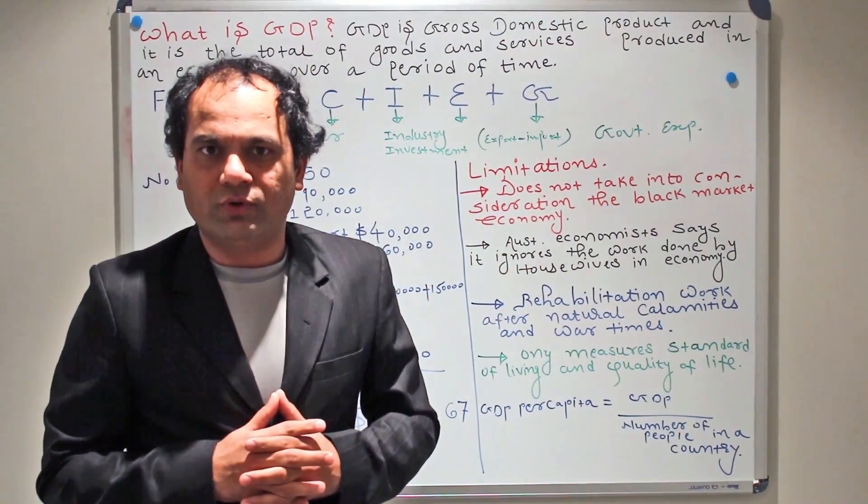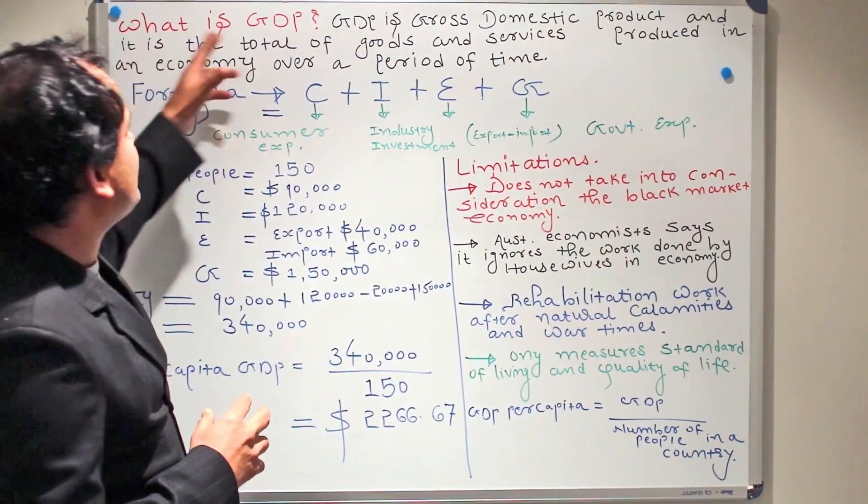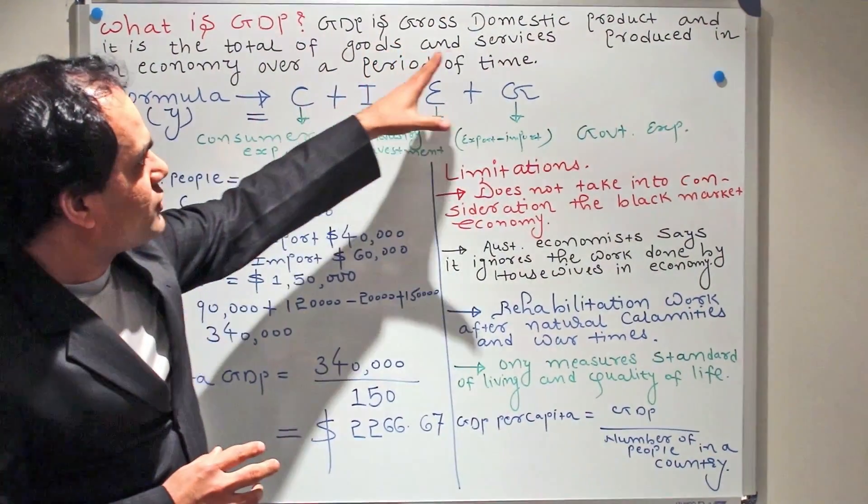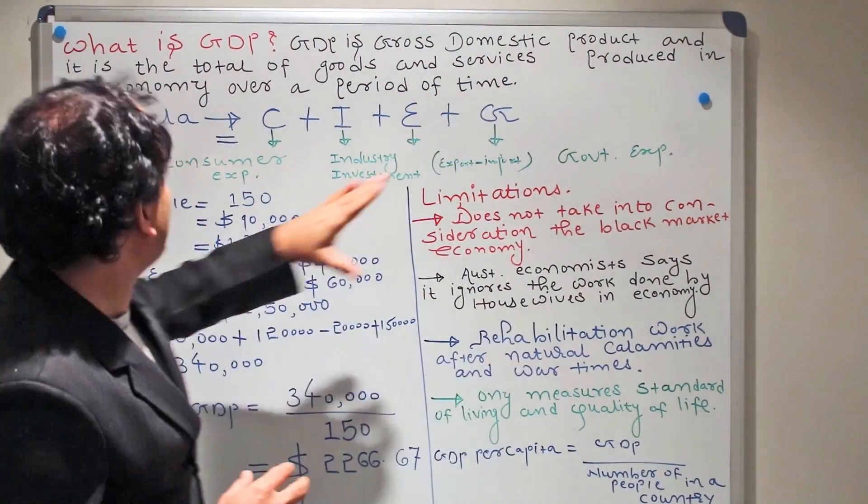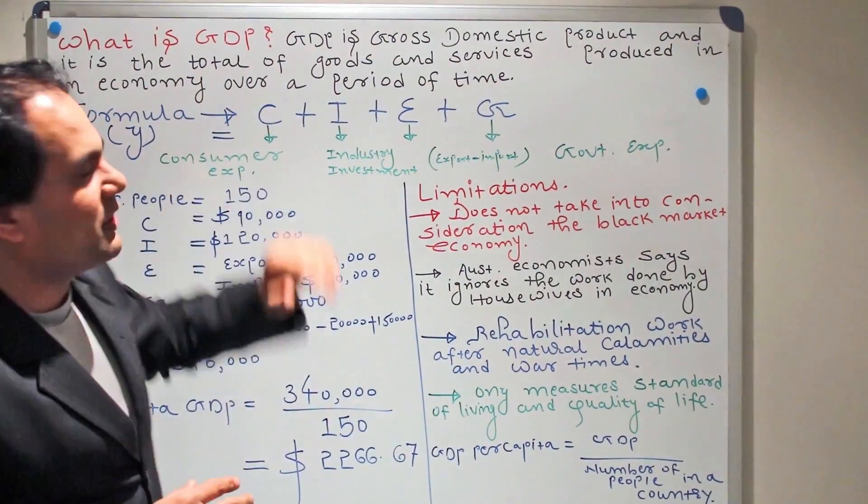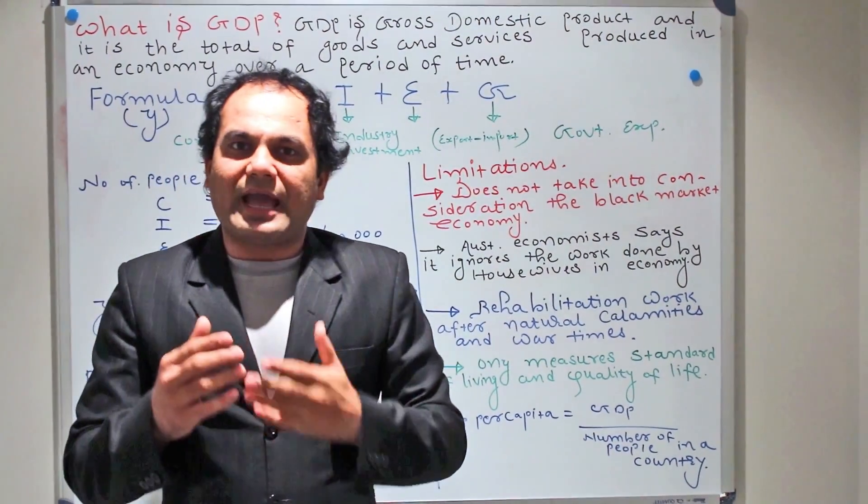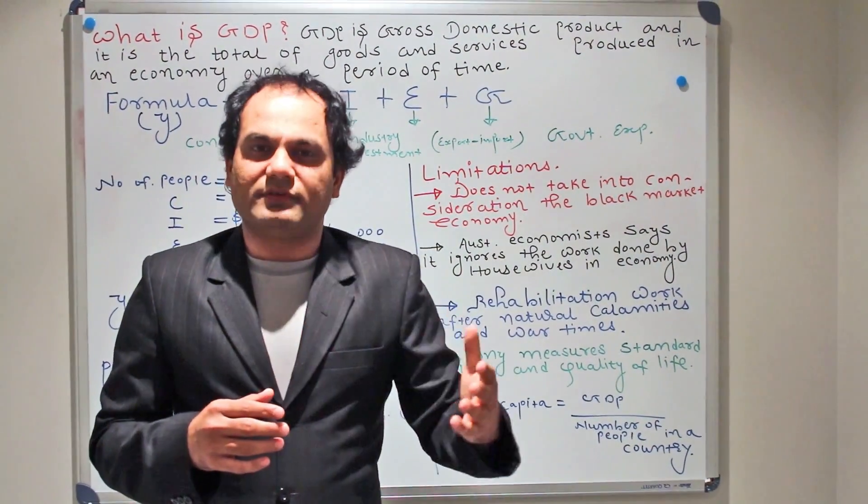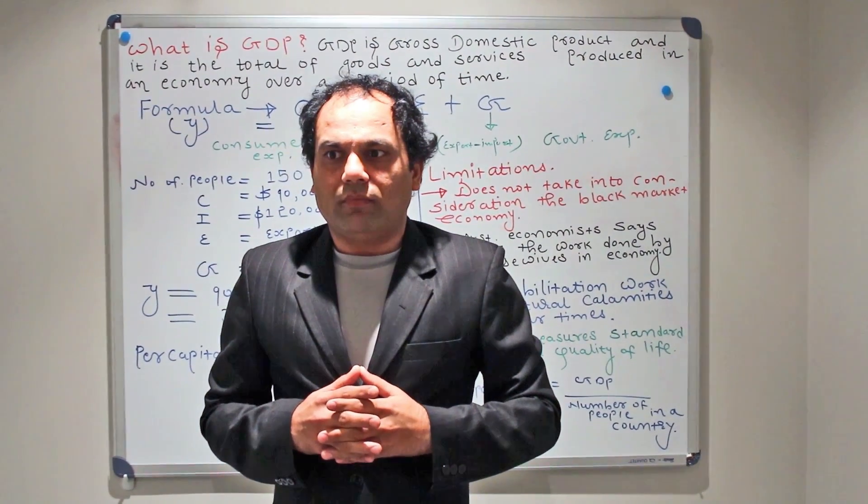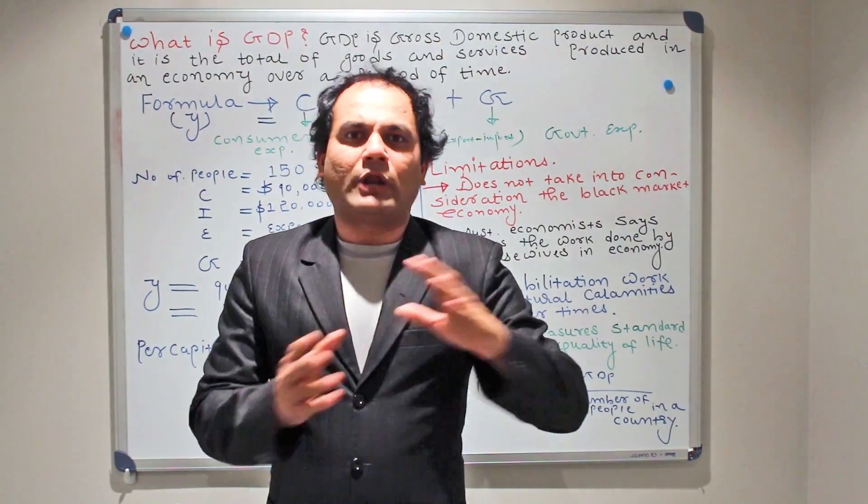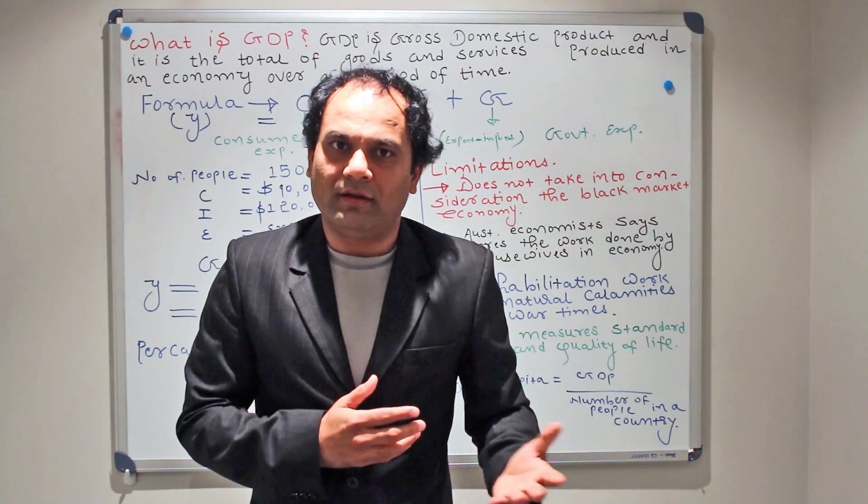What is GDP? GDP is gross domestic product and it is the total of goods and services produced in an economy over a period of time. In simpler words, it is the aggregate of goods and services being produced in an economy over a period of time. With the calculation of GDP, we can figure out whether an economy is doing good or bad.